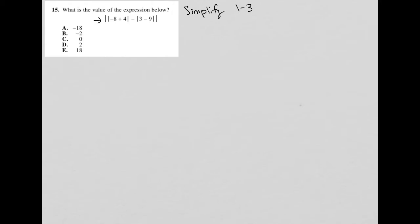We have an expression, so I'm going to rewrite it. I have an absolute value, then inside another absolute value of negative eight plus four, minus another absolute value of three minus nine, close that absolute value, and close this outside absolute value as well.